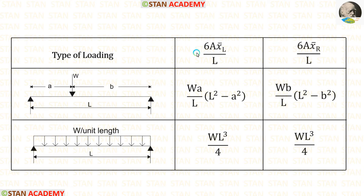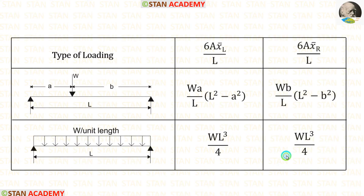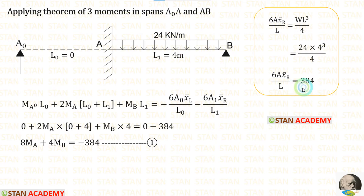Alternatively, we can use the formulas for 6AX̄_left/L and 6AX̄_right/L to make the equations more easily. Using these formulas, let us make the first equation. In span AB there is UDL, and we need 6AX̄_right/L. The formula is WL³/4. Here W = 24 and L = 4, giving 384. After applying this value, we are making the first equation.